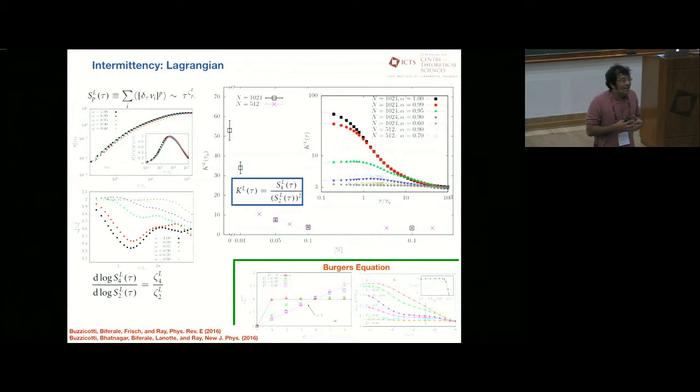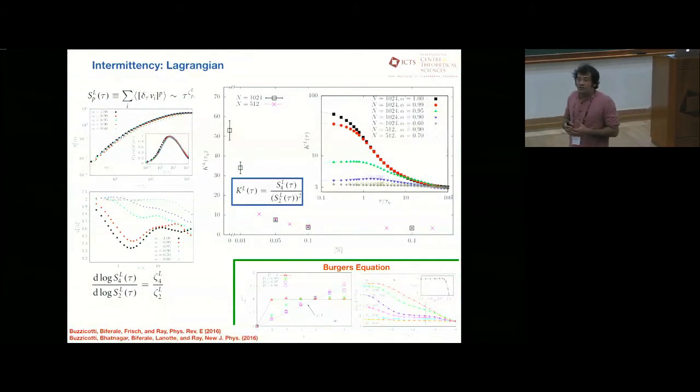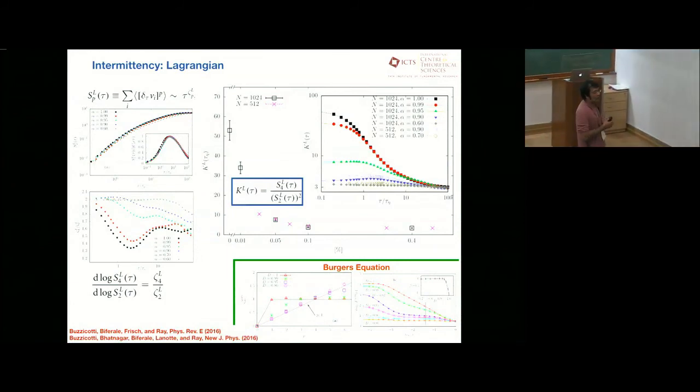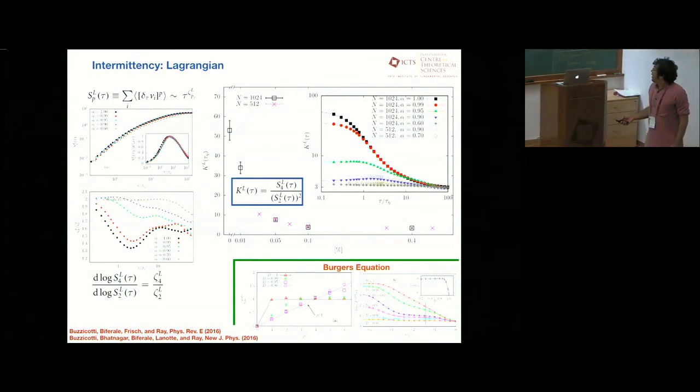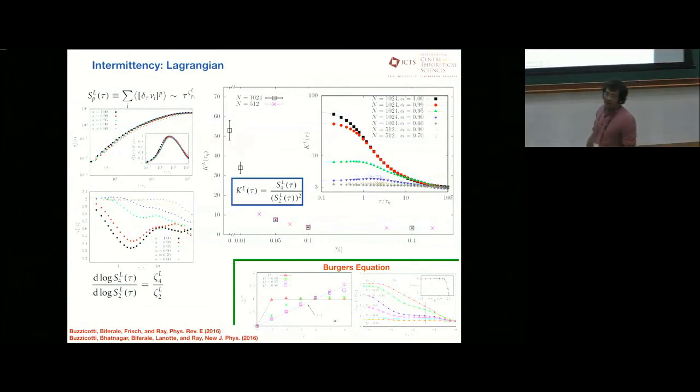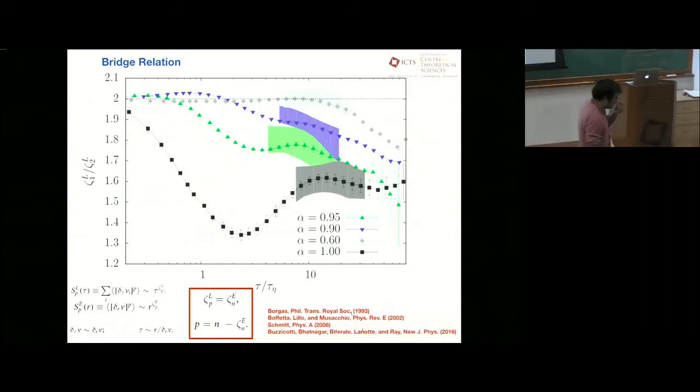So again, a clear signature that playing with the non-linearity, or the clear sort of indication that if one were to answer the question, what is the origin of intermittency in the Navier-Stokes equation, one probably has to go and look at the structure of the non-linear term. Again, as I said, you can sort of do a better job in the one-dimensional Berger's equation, because you have a better theoretical handle on the Berger's or KPZ equation, and the message is really the same.